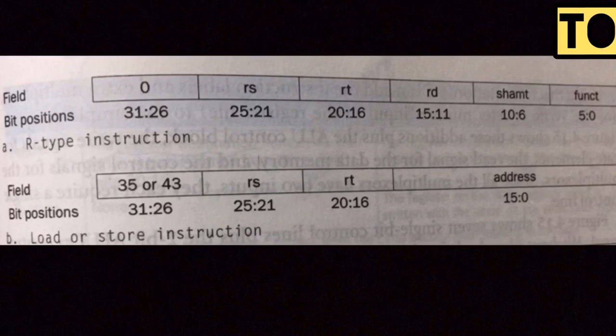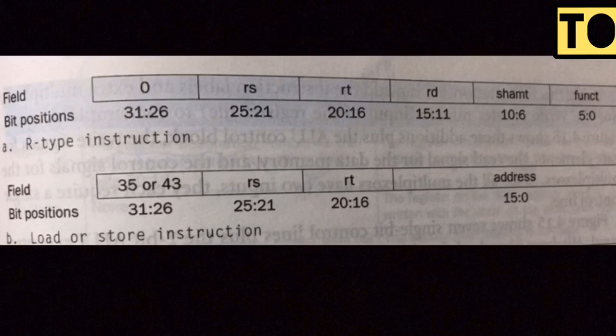That is the R-type instruction. The format is: opcode, RS, RT, RD, shift, and function. Bits 26 to 31 are the opcode, 21 to 25 is RS, 16 to 20 is RT, 11 to 15 is RD, 6 to 10 is SHAMT, and 0 to 5 is the function field.